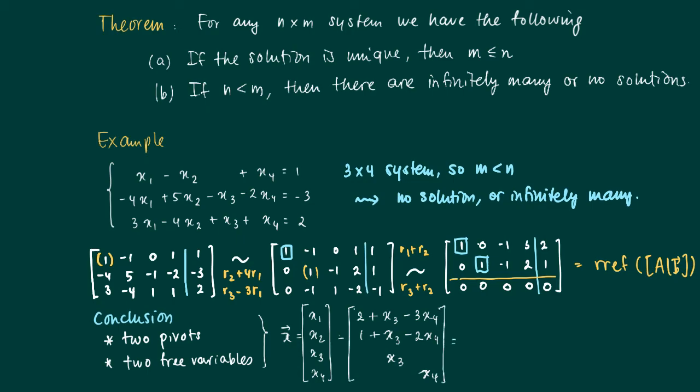We can split off a vector of constants, which is (2, 1, 0, 0), and a part depending on x₃, which is x₃ times the vector (1, 1, 1, 0), plus x₄ times the vector (-3, -2, 0, 1).